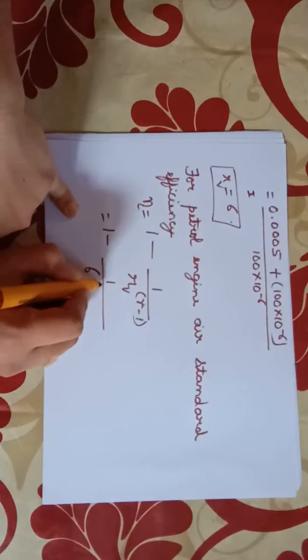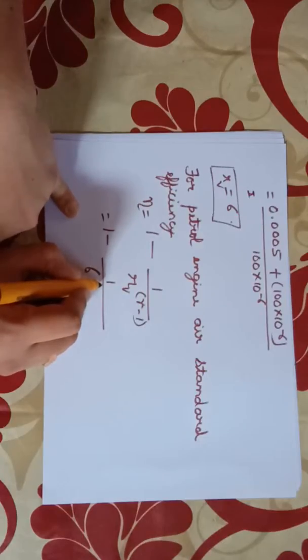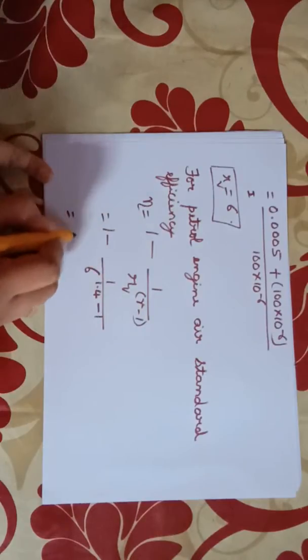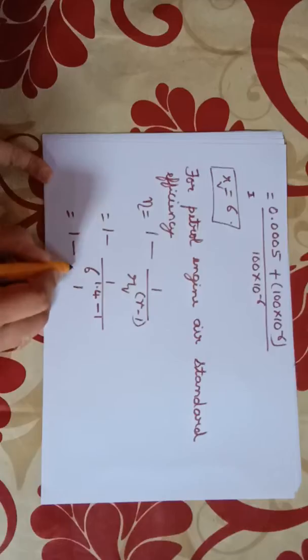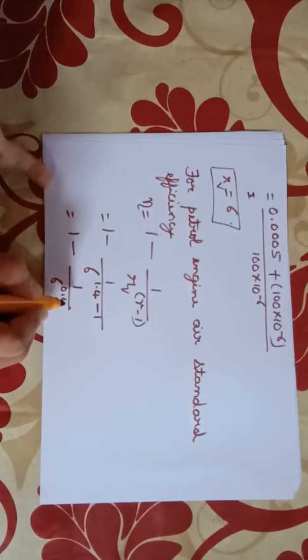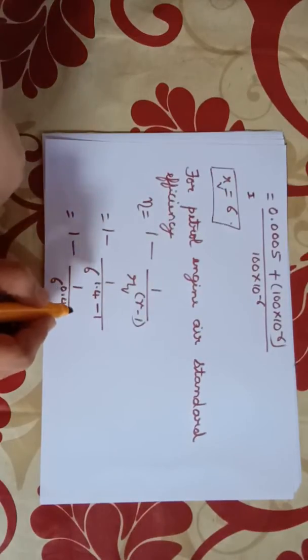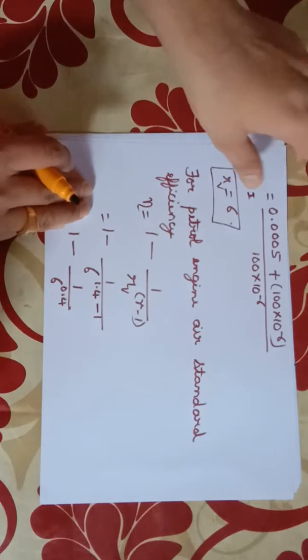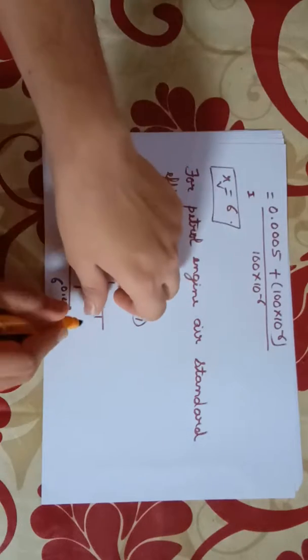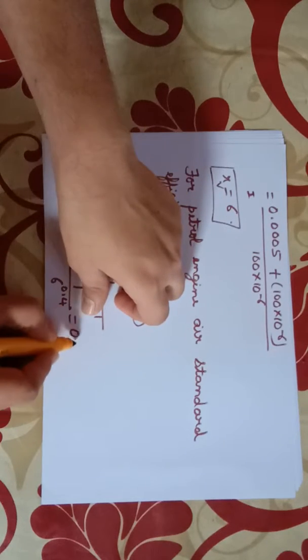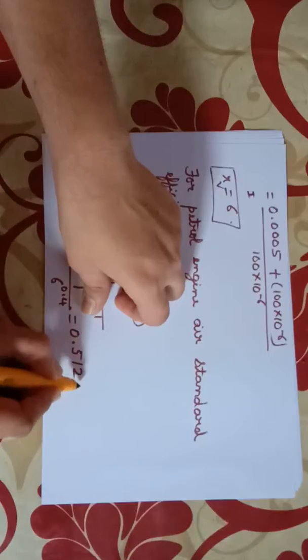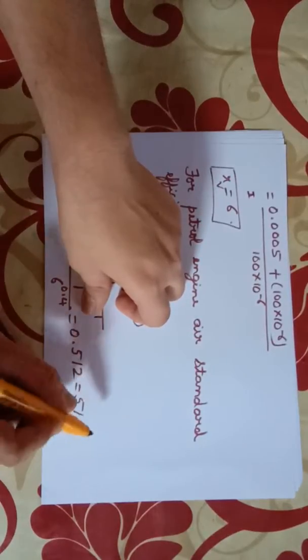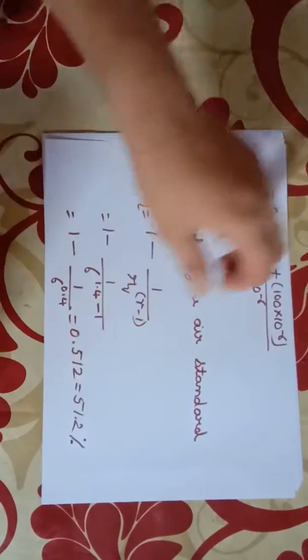That is equal to 1 minus 1 by 6 raised to 0.4, that will be equal to 0.512, that will be 51.2 percent.